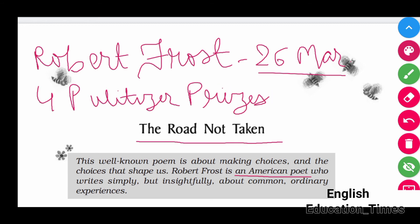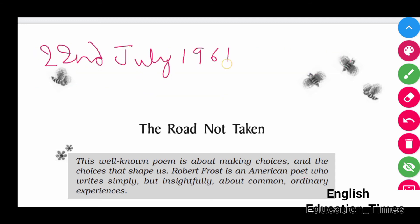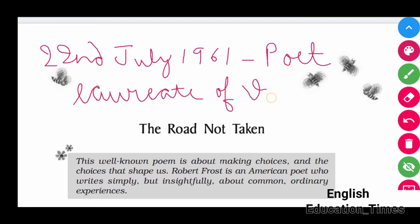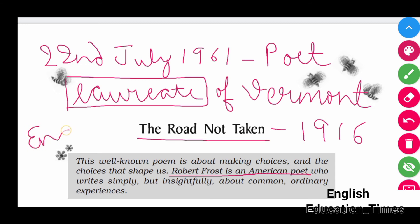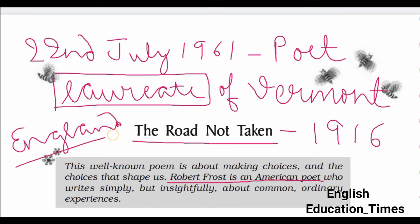Pulitzer Prizes are given to those who have done outstanding creations in the field of literature. On July 22nd, 1961, Frost was named as Poet Laureate of Vermont. The title of laureate is given to those poets and writers who have done outstanding creations and intellectual achievements in literature. The poem 'The Road Not Taken' was published in 1916. Frost was an American poet but in earlier days he used to publish all his creations in England.